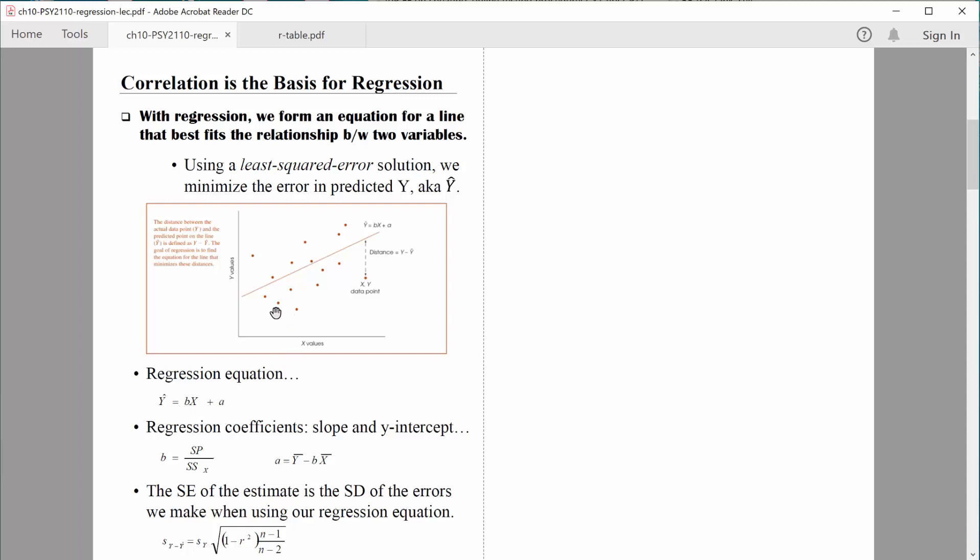If the slope of the line is positive, like this one right here indicating a positive correlation, then that b value, that slope, will be a positive number. And what this y-intercept represents is where this regression line crosses the y-axis. So it's the point at which x equals 0, it will tell us exactly what y is in that situation.